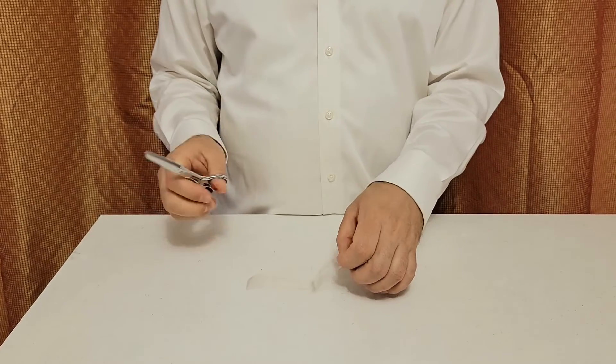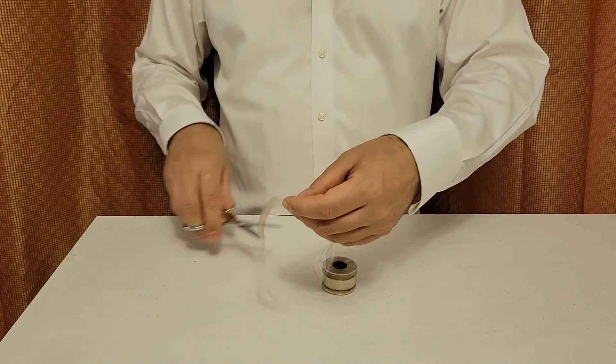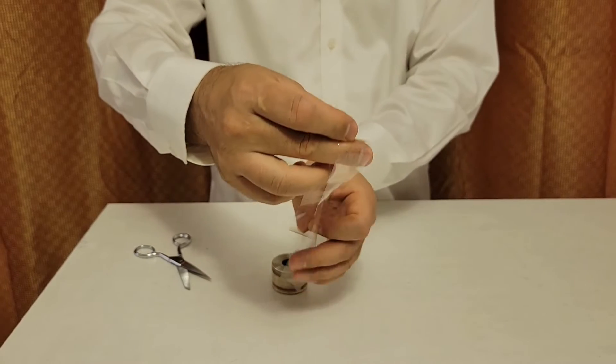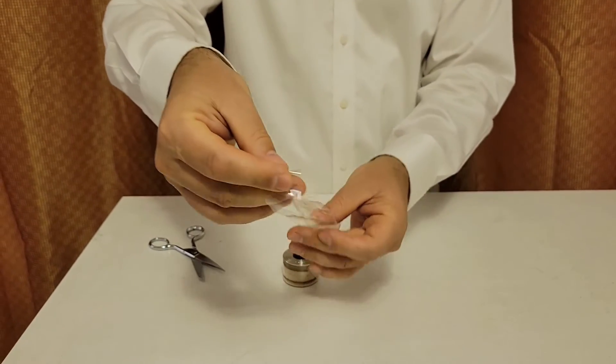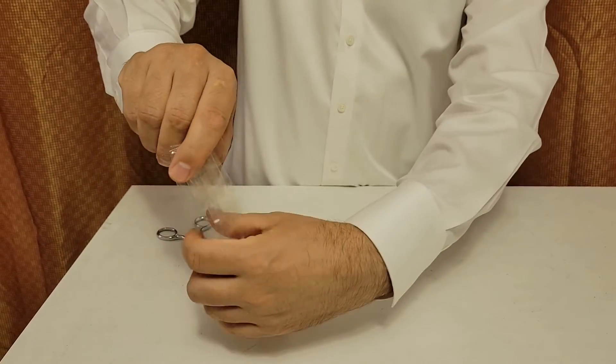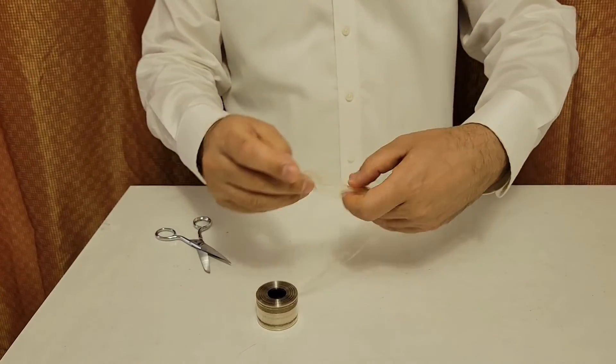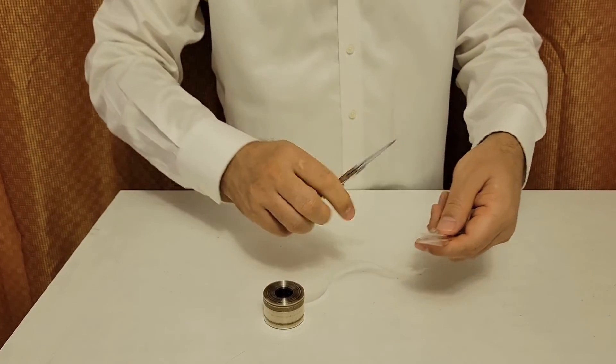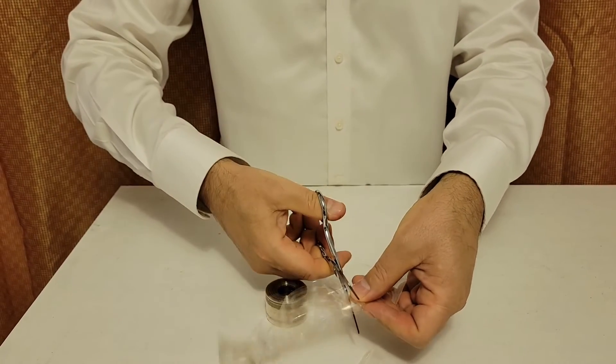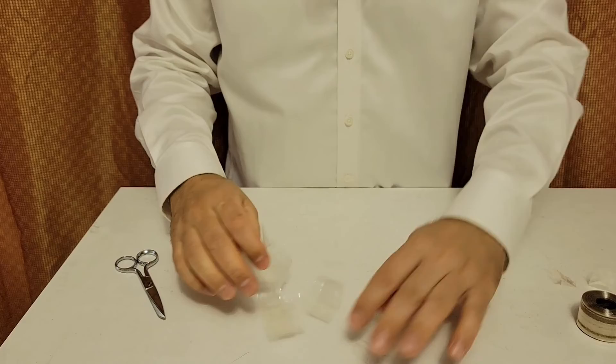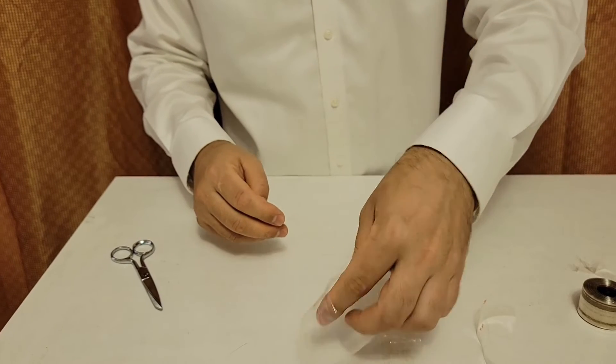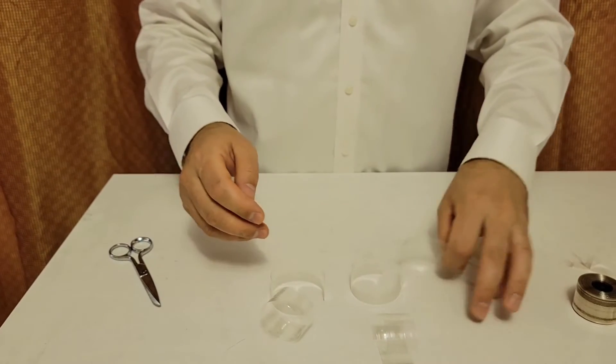So instead of cutting dialysis tube one by one, you can simply use this trick by folding the dialysis tube one, two, three, four times and cut it at once on one end and on another end. Here we have five dialysis tubes: one, two, three, four, five.